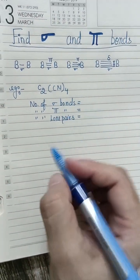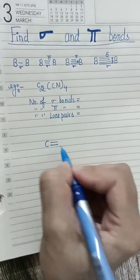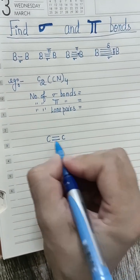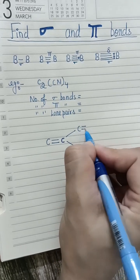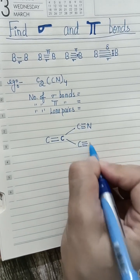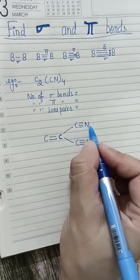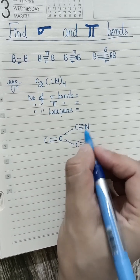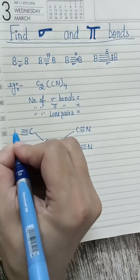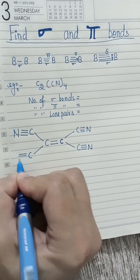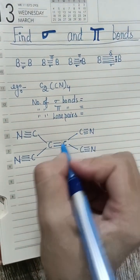Before finding Sigma bonds, you have to know the structure of this molecule. We know that carbon forms four bonds — two bonds here, and the third one is with the cyanide group. In the cyanide group, between carbon and nitrogen there are three bonds present: one, two, three.